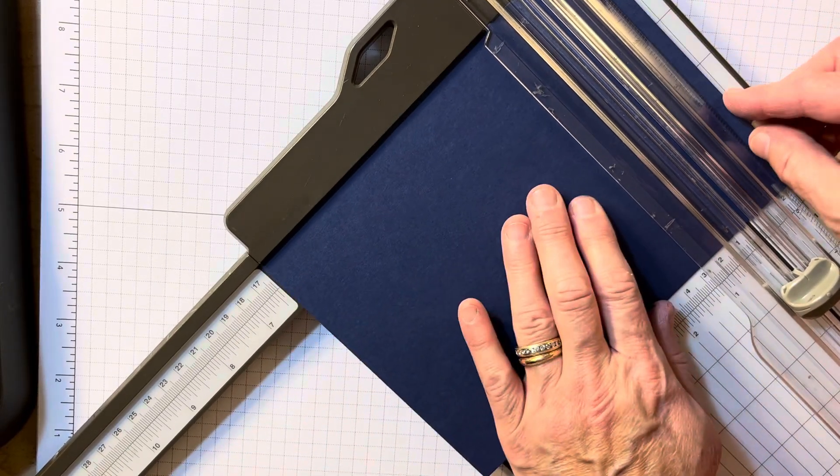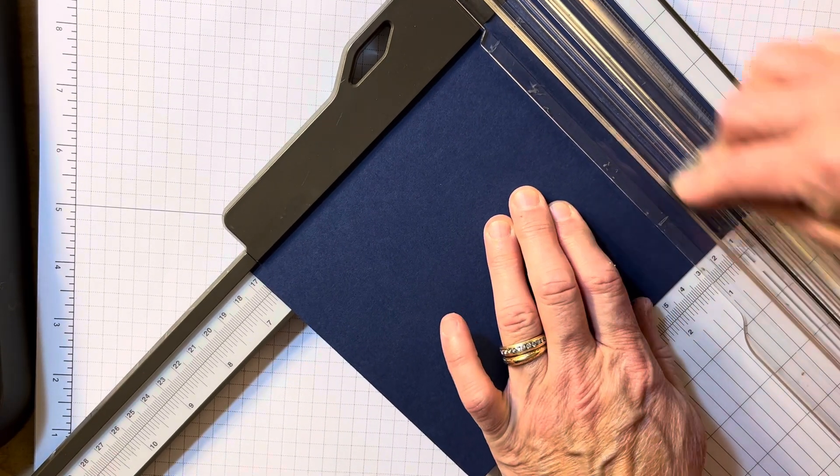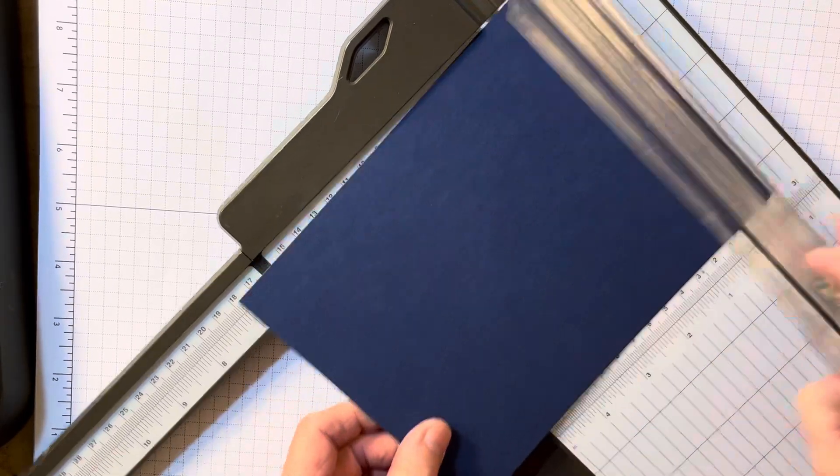I'm going to score it at three and a quarter and six and a half. Okay, so I've got three and a quarter and six and a half.